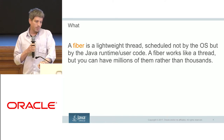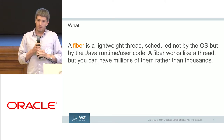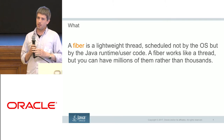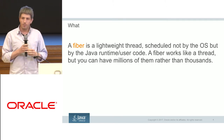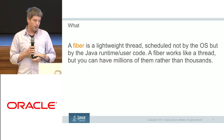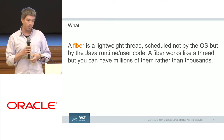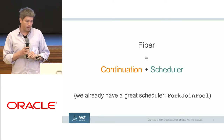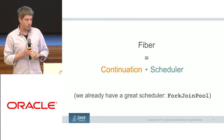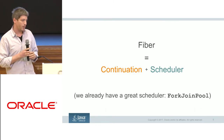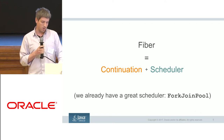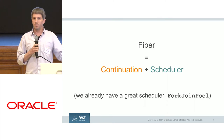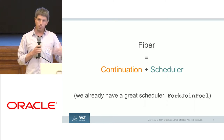A fiber is a lightweight thread. It behaves exactly like a thread, but it is scheduled and managed not by the operating system kernel, but by the Java runtime or user code. And it's lightweight, both in terms of memory and in terms of switching costs. A fiber, or a thread in general, is just a continuation plus a scheduler. We already have a very good scheduler in the JDK, so we just need to add the continuations. And fibers are the main motivation for adding continuations, although they do have other uses.